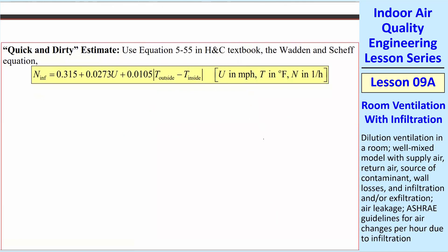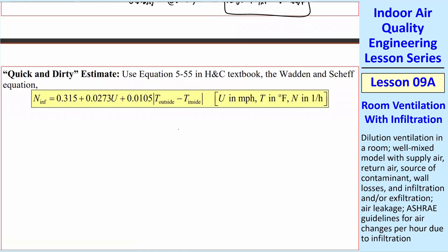There's all kinds of empirical equations. I'm not going to use any of them except this one. This is the simplest one, and it's a nice, easy one to use. This is just an engineering equation. You have to have the correct units to get the correct answer. The wind speed is in miles per hour. T is in degree F. And N then is 1 over hour. And this is the equation. It's called the Wadden and Scheff equation.